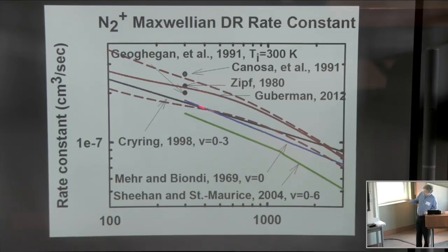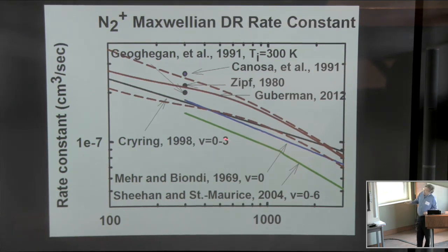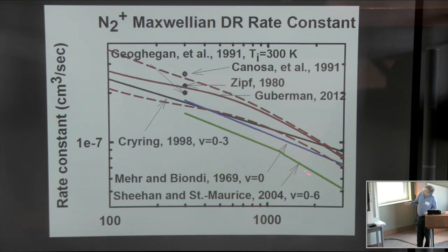temperature and up to about 500 degrees and then it departs from the theory and then comes back at the highest temperatures. But it's also a straight line which does not agree with the theory. And a reinterpretation of an early single pass merged beam experiment of Brian Mitchell's puts the rate constant over here and that clearly appears to be incorrect.